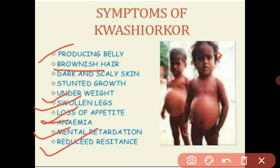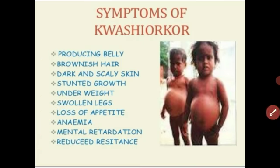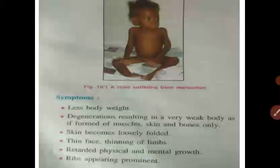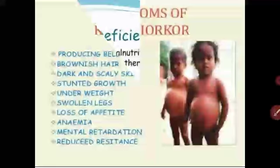These are the symptoms of Kwashiorkor. To control this disease and treat children suffering from Kwashiorkor, we should give them a protein-rich diet like pulses, milk, eggs, fish, and meat. Providing protein-rich food to the child will free them from Kwashiorkor. The next disease is Marasmus.